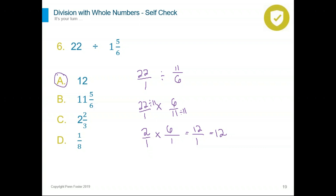I've been asked before: how come when it asks us to divide, we multiply? When you multiply times the reciprocal of the second fraction, it is equivalent to division — it's just an easier way to divide. So when we multiply times the reciprocal, we're not really multiplying; we're dividing. I hope this point is clear and not causing any confusion.